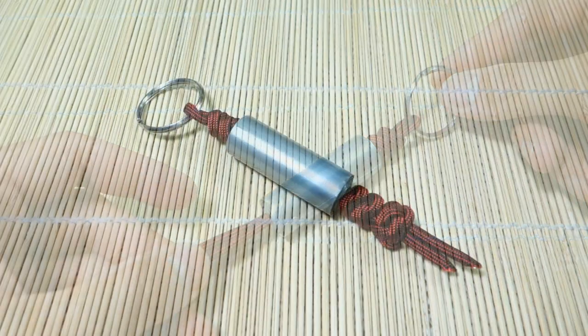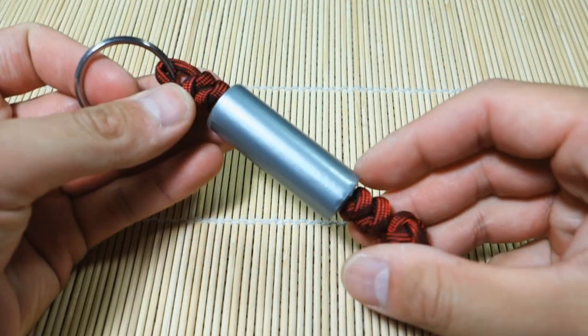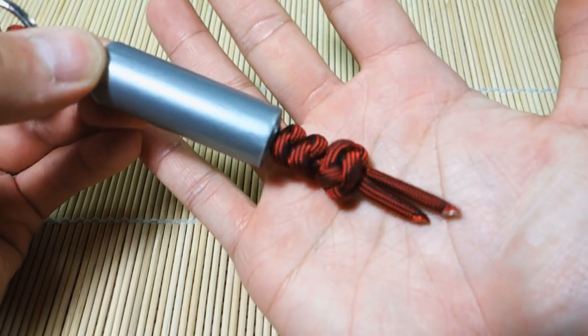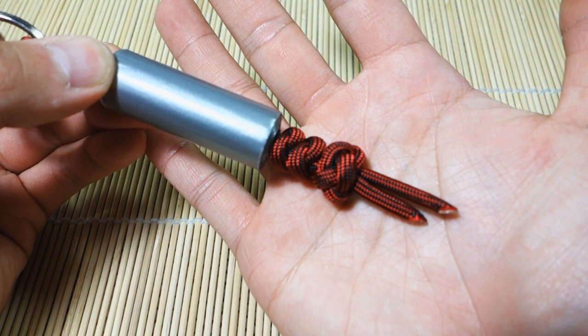Alright, and there we have it guys, I'm done. So I tied my snake knots, two up top, two down below, finished it with the diamond knot. This is actually the exact same way I do my knife lanyards.